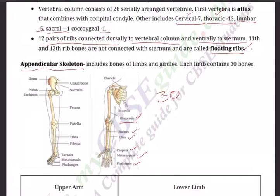The hindlimb consists of: femur — the thigh bone and the strongest bone in the body; patella — the round disc-shaped bone at the knee joint; tibia and fibula in the lower leg; seven tarsals near the foot; five metatarsals in the foot; and 14 phalanges — the digit bones of the leg.